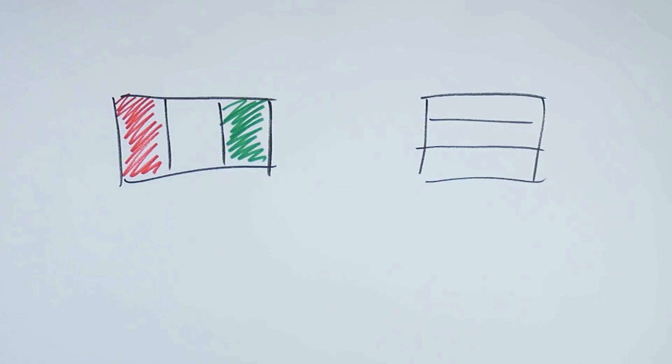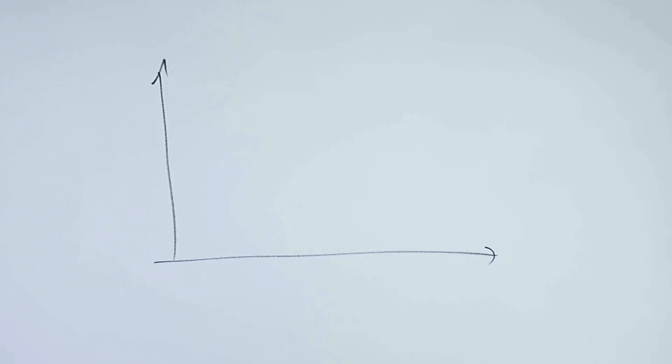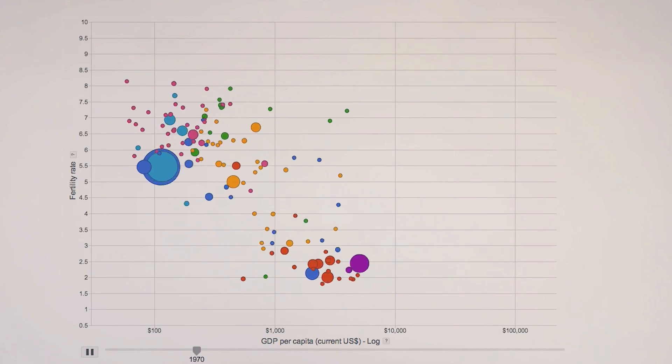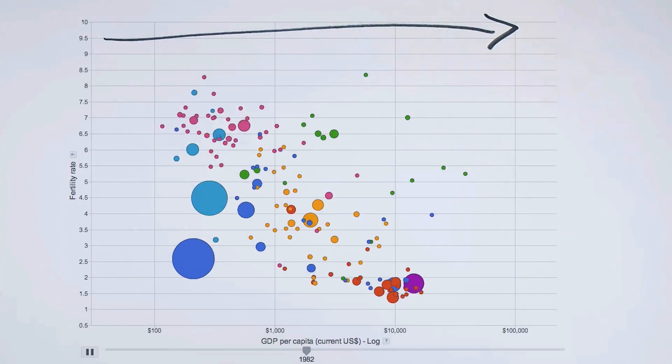This number is great because it lets us compare data between countries and to track trends over time. Since the 1950s, as countries have gotten richer, fertility rates have subsequently gone down.